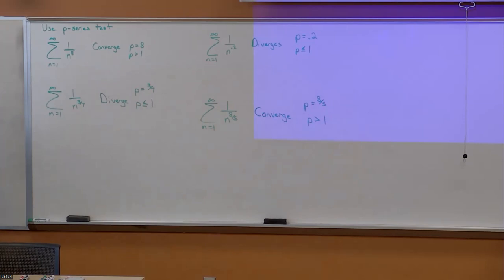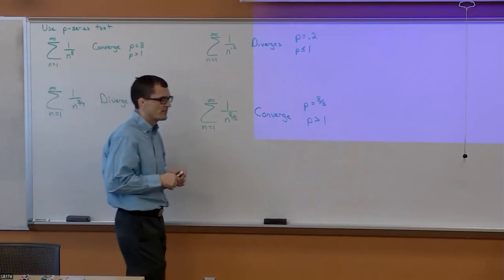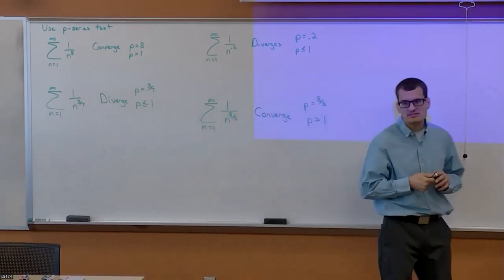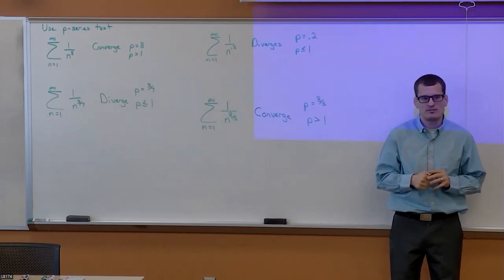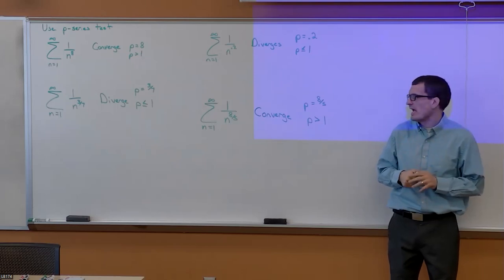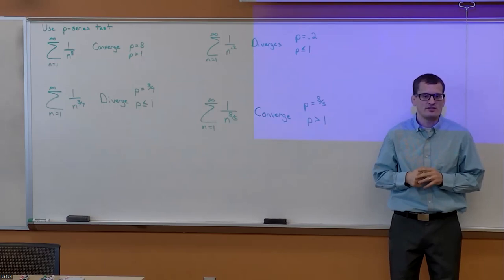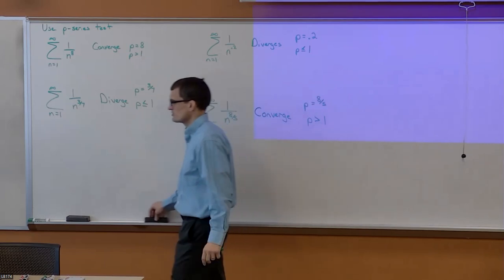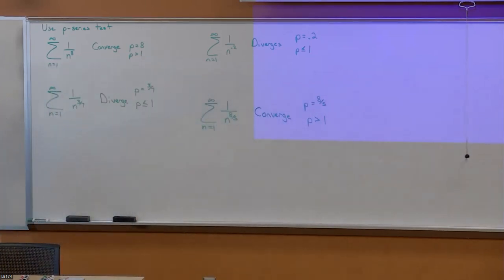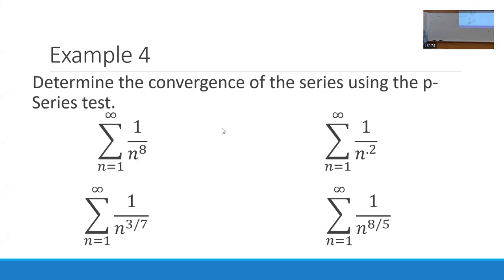Any p-series with power less than or equal to 1 is going to diverge. And then the last one, 1/n^(8/5): that converges because p = 8/5 = 1.6, which is more than 1. Notice how quickly the p-series test allows us to say converge or diverge — much, much faster than doing the integral test, and much, much faster than trying to do partial sums.